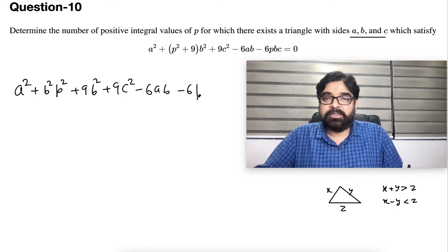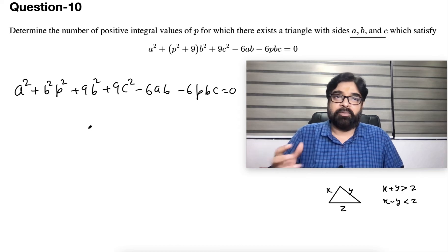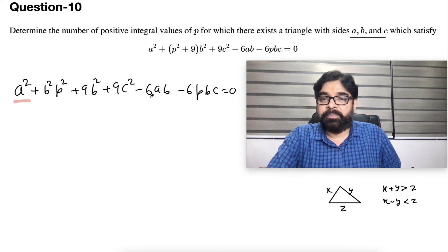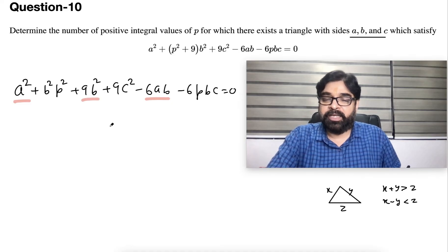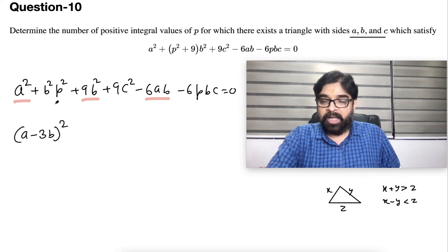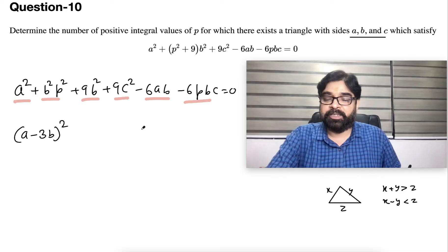a² is there, 6ab is there, and 9b² - they can be combined and this will become (a - 3b)². And these can be combined: p²b², 9c², 6pbc, and this will become (pb - 3c)².